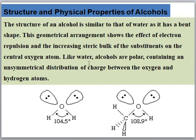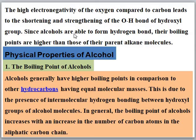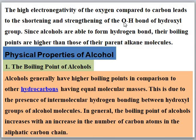Like water, alcohols are polar, containing an asymmetric distribution of charge between oxygen and hydrogen atoms. The high electronegativity of oxygen compared to carbon leads to the shortening and strengthening of the oxygen-hydrogen bonds of the hydroxyl group. Since alcohols are able to form hydrogen bonds, their boiling points are higher than those of their parent alkane molecules. This hydrogen bonding is due to the electronegativity difference created between the oxygen and hydrogen atoms of the alcohol.